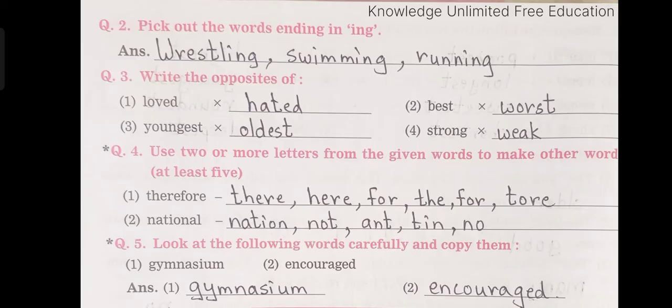Question number 3: Write the opposites. Loved — hated. Best — worst. Youngest — oldest. Strong — weak. Question number 4: Use two or more letters from the given words to make other words, at least five.